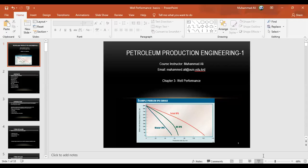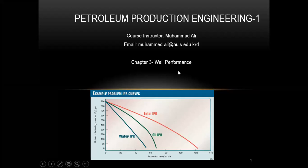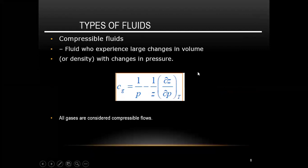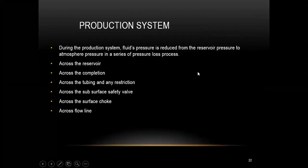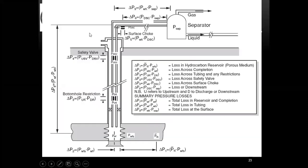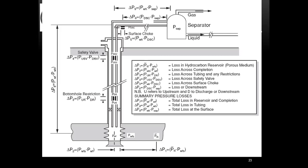Welcome back to the class of production engineering. This is one of the most important lectures of the production engineering course. This slide is the most important slide because it represents the pressure drops inside the plumbing system or the production system. As a production engineer, our job is to manage this system from the reservoir to the surface. Through this plumbing system, we are getting oil, gas, or water — three phases, three products coming towards the surface.